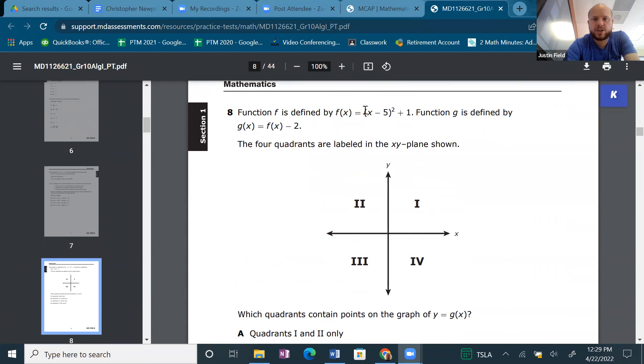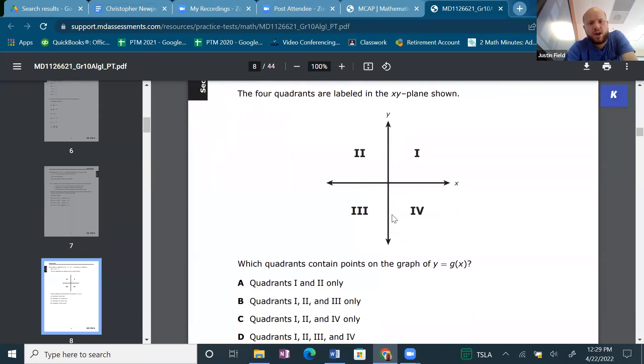Back to functions. Vertex form I'm seeing. And I'm shifting it down too, right? We're taking the y-values and subtracting 2 from each of them. Okay. Oh, and we're talking about quadrants, but they gave us the quadrants: 1, 2, 3, 4, just in case you forgot.